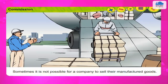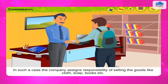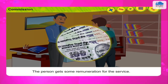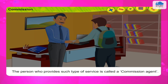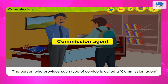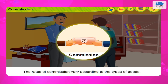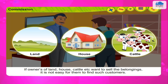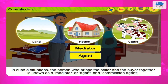Commission. Sometimes it is not possible for a company to sell their manufactured goods. In such a case, the company assigns responsibility of selling goods like cloth, soap, books, etc. to another person. The person gets some remuneration for the service, which is called commission. The person who provides such a service is called a commission agent. Commission is decided in terms of percentage, and the rates vary according to the types of goods.